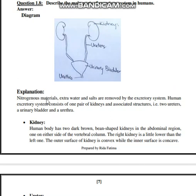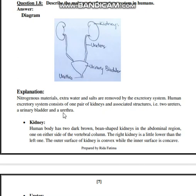Nitrogenous materials, extra water, and salt are removed by the excretory system. The human excretory system consists of one pair of kidneys and associated structures — that is, two ureters, a urinary bladder, and a urethra.